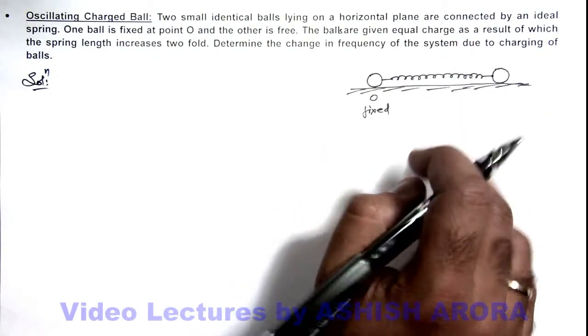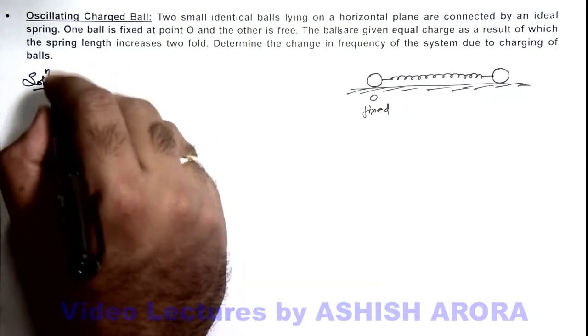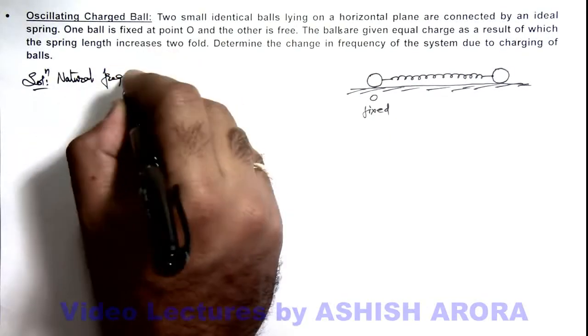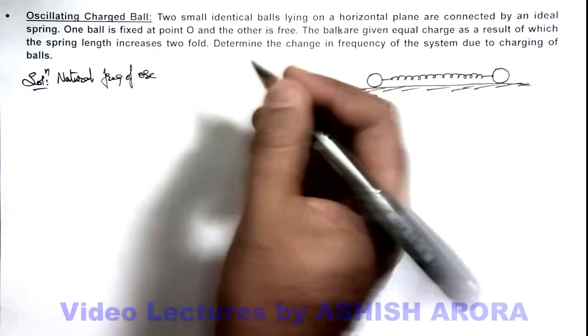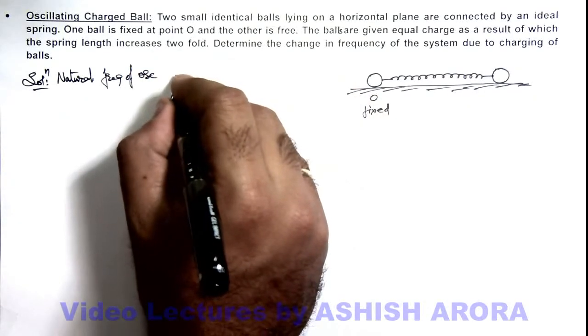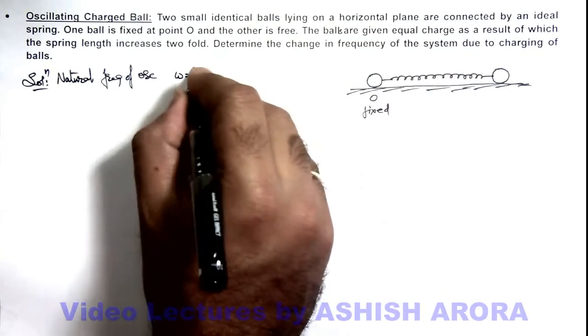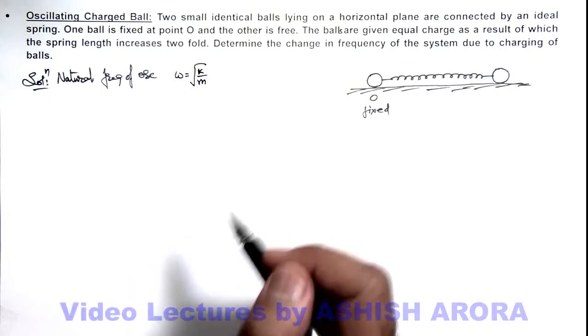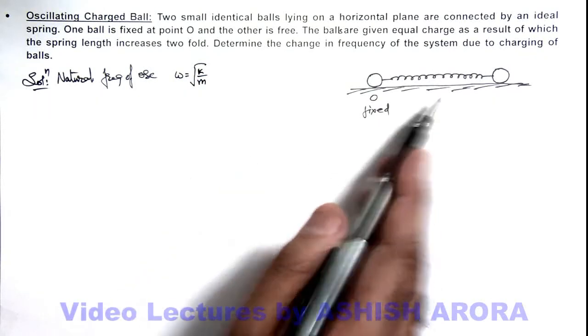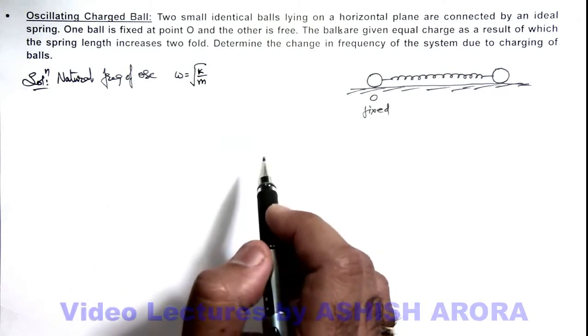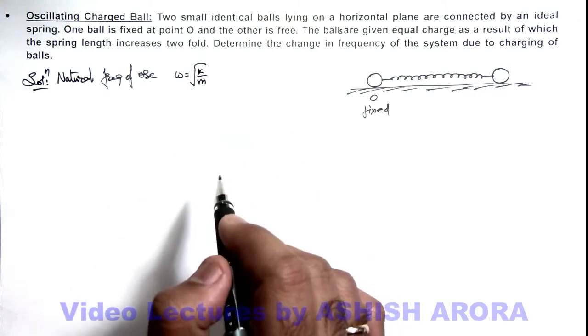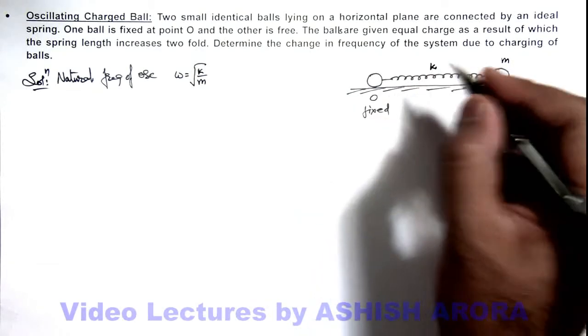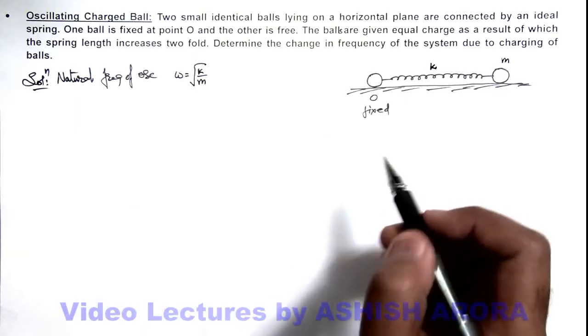Due to charging of balls. So if we talk about the natural frequency of oscillations, this can be given as omega which is root of k by m. This I hope all of you have studied in simple harmonic motion. If you are not able to recall, go through all the videos of simple harmonic motion. So here if the ball is of mass m and spring is of force constant k, the natural frequency of oscillation is root of k by m.